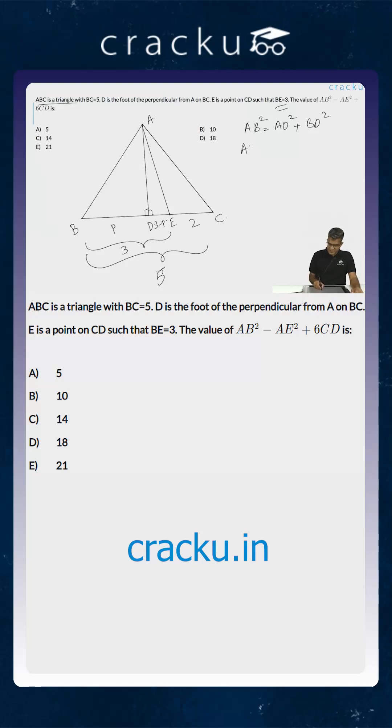What is AE square? AE square is equal to AD square plus DE square. So the value of AB square minus AE square is equal to BD square minus DE square.